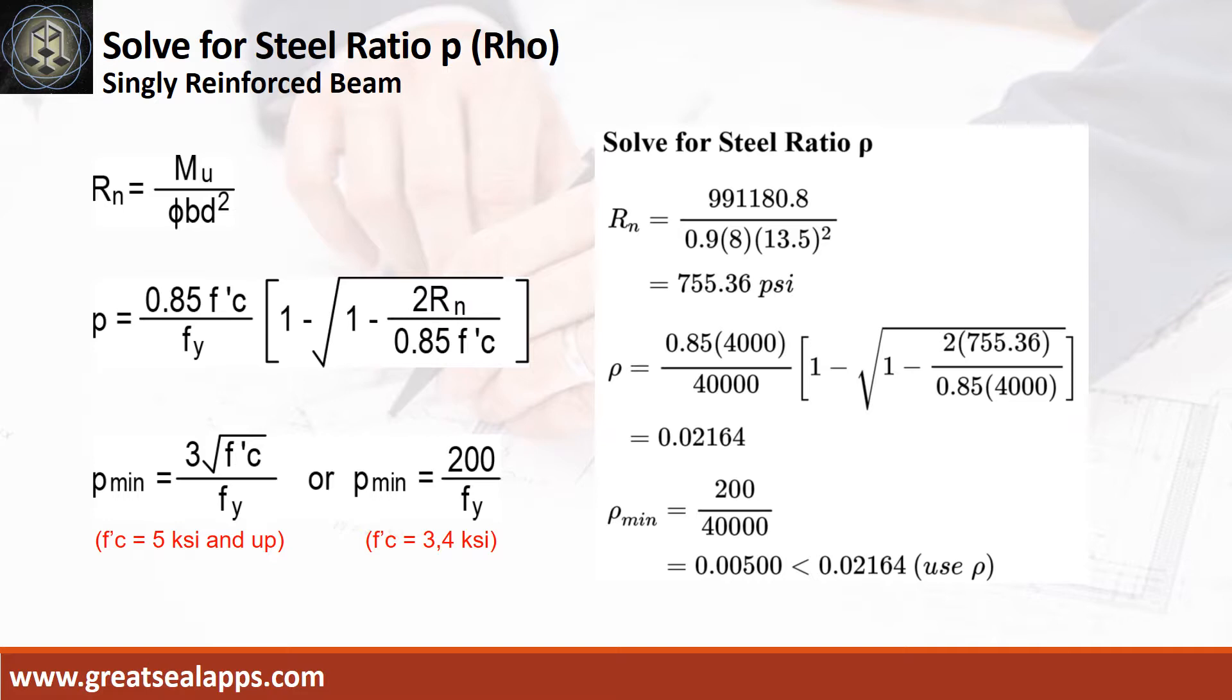The beam design ratio Rn equals 755.36 psi. And reinforcement ratio ρ equals 0.02164.